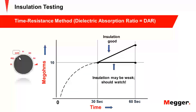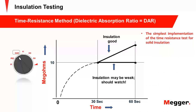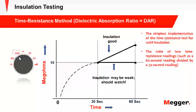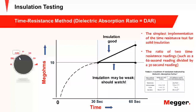With the DAR — dielectric absorption ratio — we get the 60-second value divided by the 30-second value. If insulation is good, it shows a continual increase in resistance. If it has moisture or contamination, it could be a flat curve after 60 seconds. The PI is the ratio of the 10-minute reading over the 1-minute reading — the simplest implementation of the time resistance test for solid insulation. For the DAR assessment, it is excellent if you get 1.6 and above, good if 1.4 to 1.6, and questionable if 1 to 1.25.